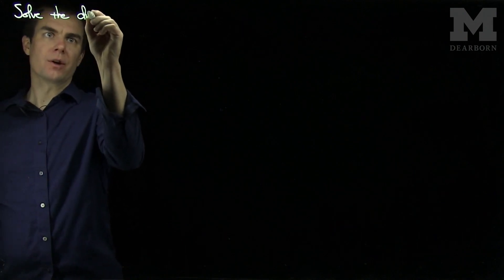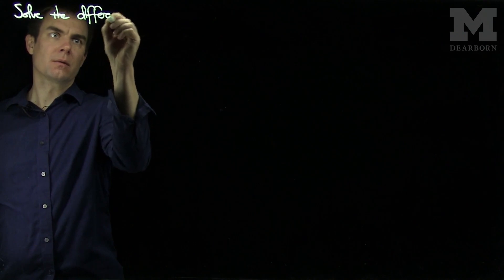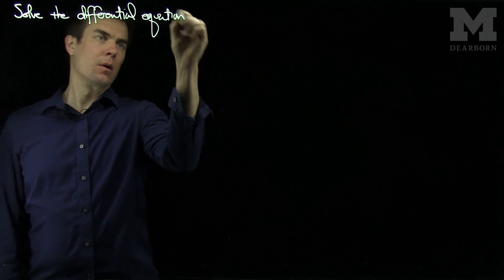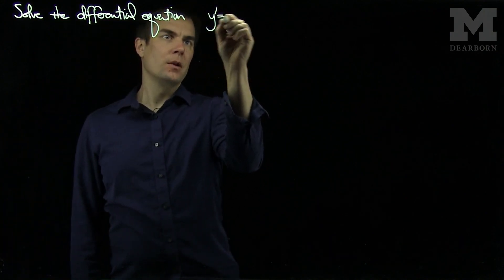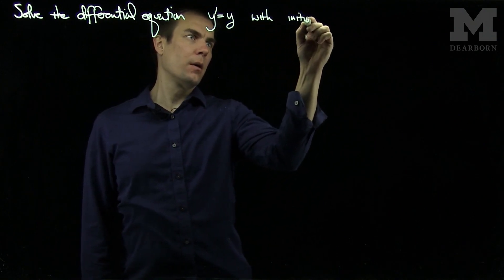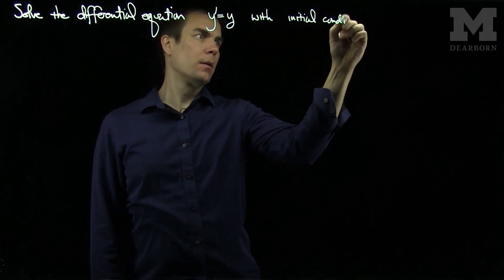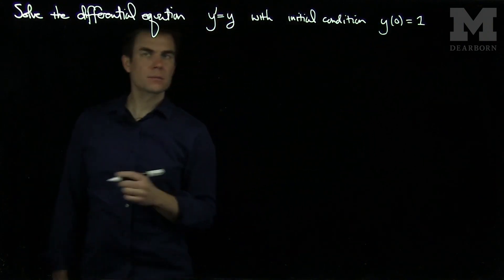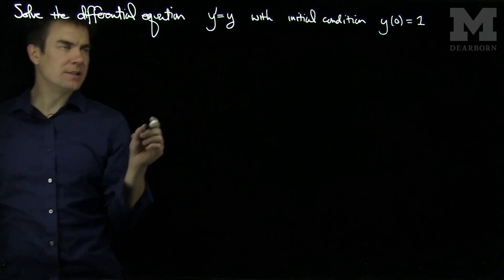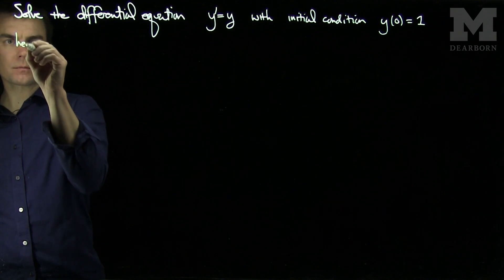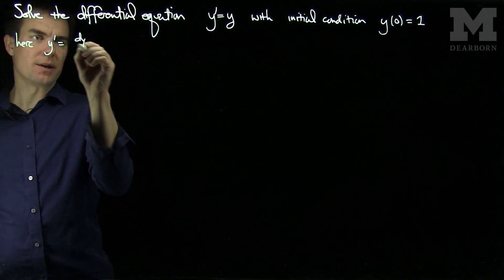Let's solve the differential equation y prime equals y with the initial condition y of 0 is equal to 1. Here, y is my dependent variable and the prime represents derivative with respect to x. So y prime represents dy dx.